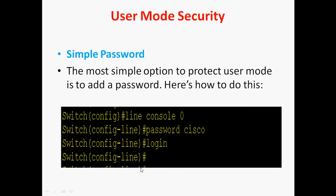So we are going to secure that. The most simple option to protect your user mode is to add a password. Here's how to do this. First, go to global configuration mode. In global mode, give the command 'line console 0'. Once you enter line console 0 and press enter, it will enter the sub-configuration mode — you can see config-line. Then create a password: 'password' is the keyword, then give your user-defined password. I set it as 'cisco', then 'login', then 'exit'. This is the simple password configuration.